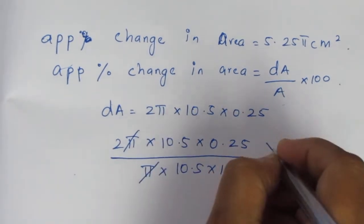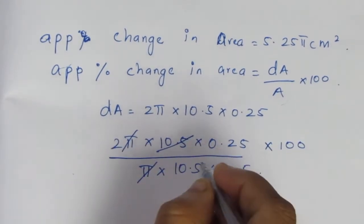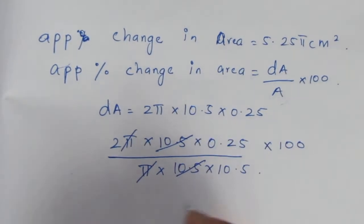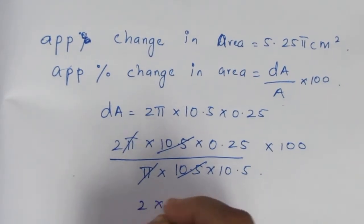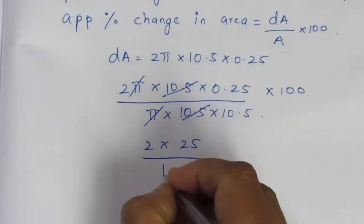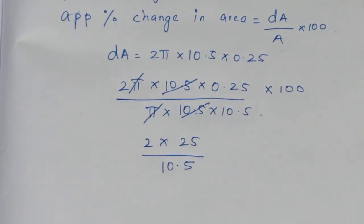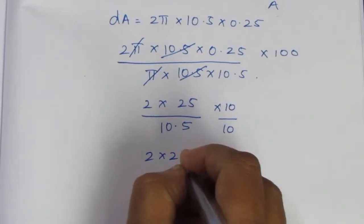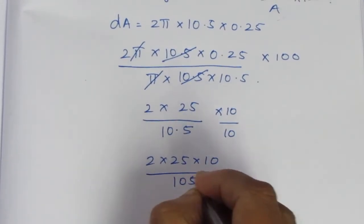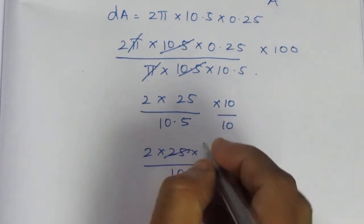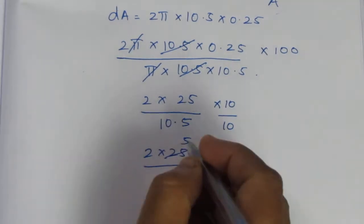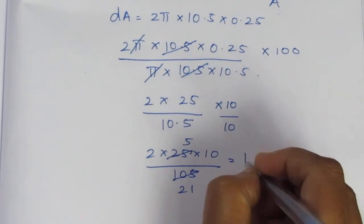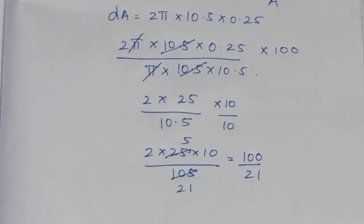Now for the percentage change, we use the formula dA by A into 100. We cancel where possible — one 10.5 and one 10.5 cancel — and we multiply into 100. This simplifies to 2 × 25 × 10 divided by 105. Cancelling the 5s, we get 100 by 21.